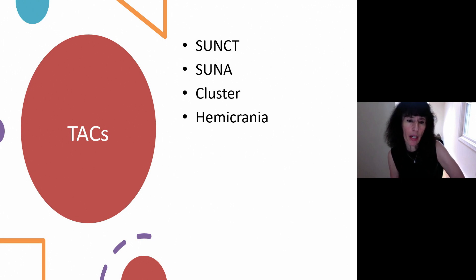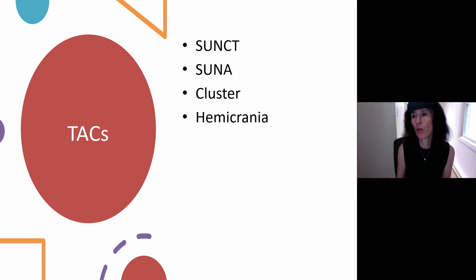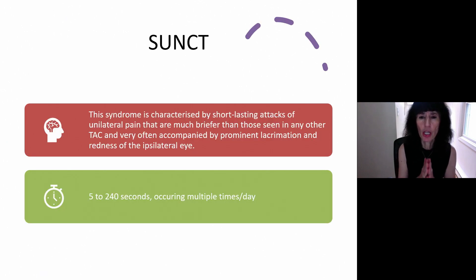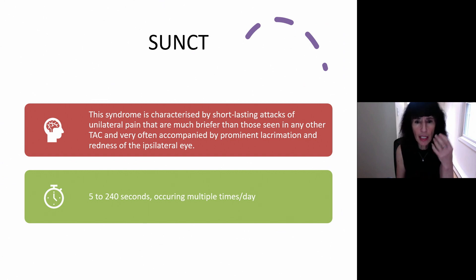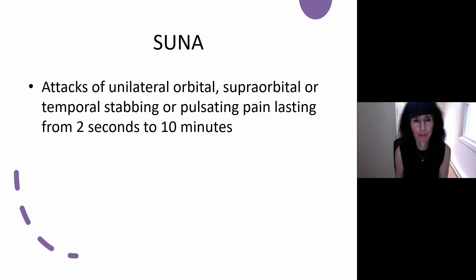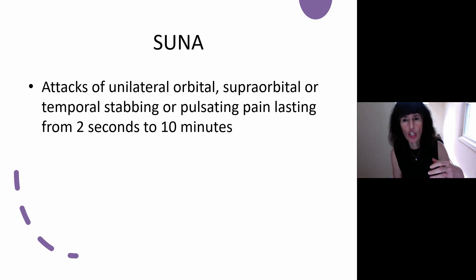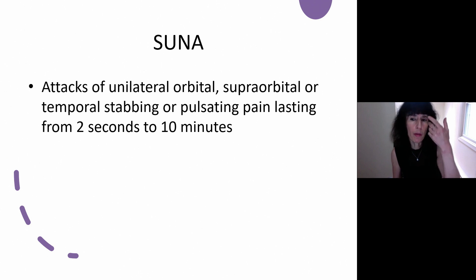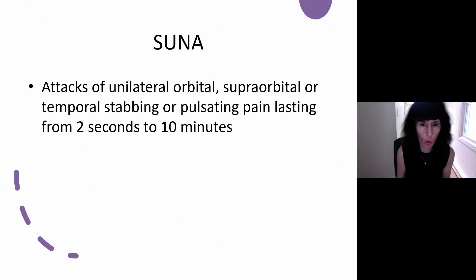Then we get to the trigeminal autonomic cephalalgias — the TACs: SUNCT, SUNA, cluster headaches, and hemicrania. These are good things to focus on for board questions because they are so specific. SUNCT stands for short-lasting unilateral headaches — they're much briefer than any other TAC. They usually have tearing in one eye or redness, almost always on the same side, lasting between 5 and 240 seconds multiple times a day. The SUNAs are a little longer — two seconds to as long as 10 minutes — unilateral orbital or temporal, stabbing or pulsating pain. They don't have the sound and light sensitivity or other migraine features.